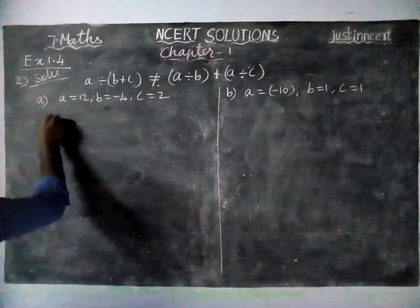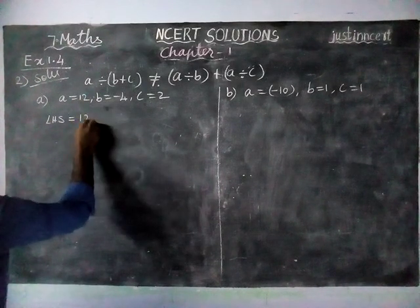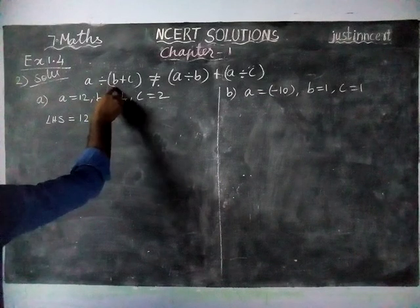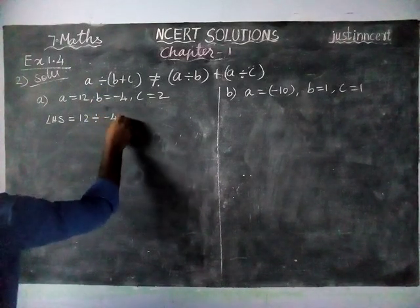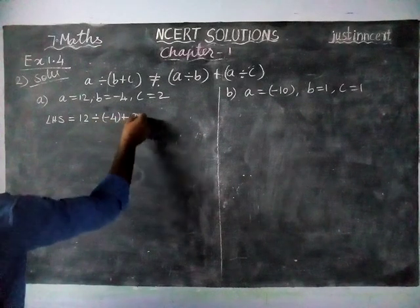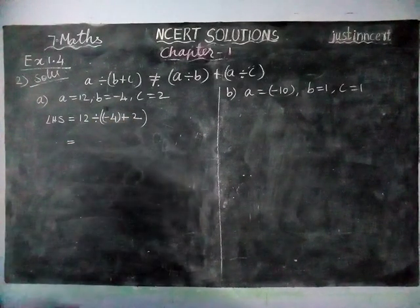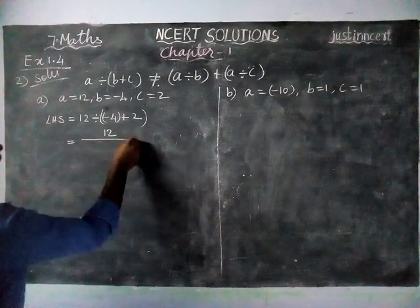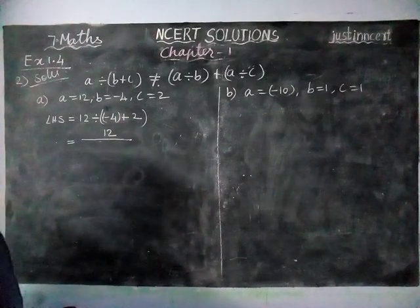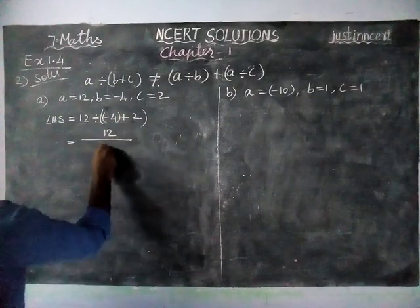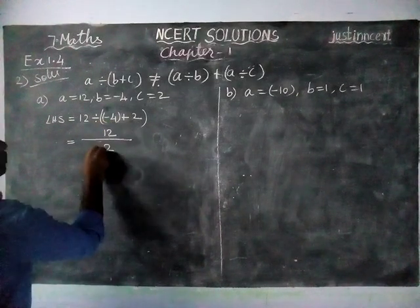Left hand side is equal to A value 12 divide by B plus C, which is minus 4 plus 2, equal to 12 divide by minus 2. Signs are different, so we find the difference: difference is 2, greater number is 4, and in front of 4 a minus sign is there, so minus 2.